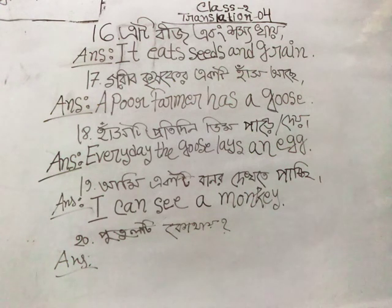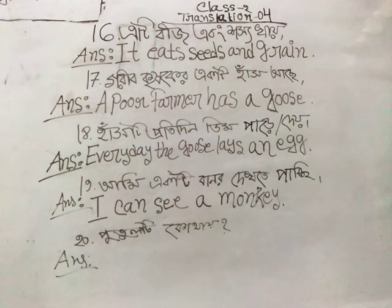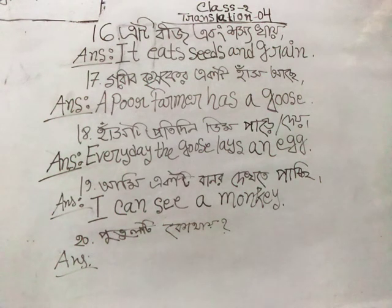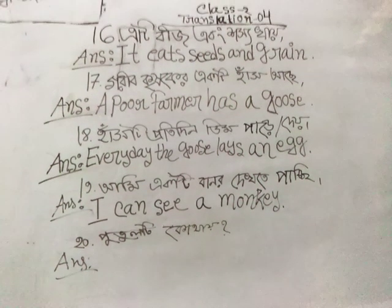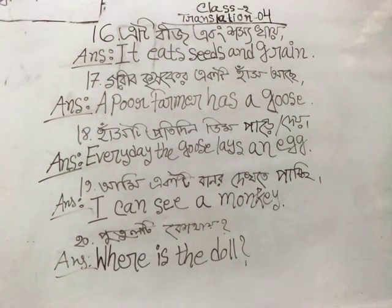Here there is a question: 'kothay' — where? In English, when we know the sentence uses an auxiliary verb or a helping verb, we check: what helping verb do we use with 'puttul'? The English for 'puttulti' is 'doll'. First we write: 'where is' — then 'the doll'. So the answer becomes: 'where is the doll?'